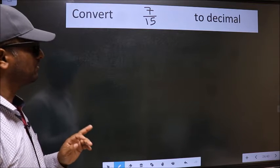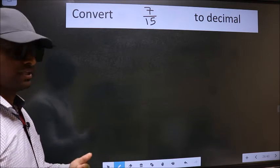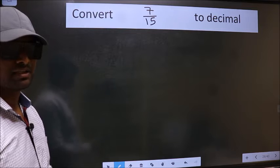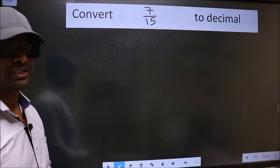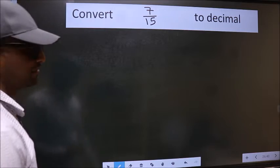Convert 7 by 15 to decimal. To convert to decimal, we should divide. And to divide, we should frame it in this way.